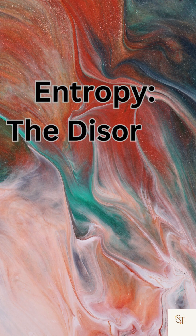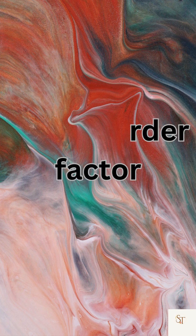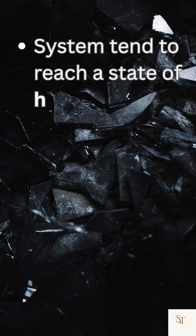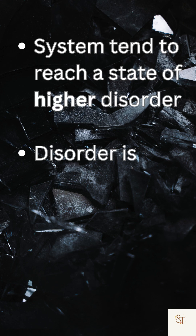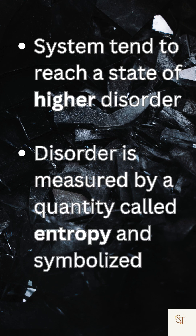The second factor is entropy, or the disorder factor. Systems tend to reach a state of higher disorder. Disorder is measured by a quantity called entropy, symbolized by S.